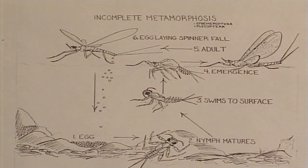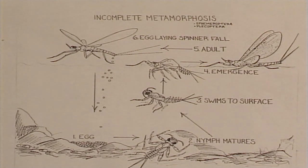Essentially, these are the mating stages. Most of these aquatic insects die or fall spent on the water after laying their eggs, again making themselves readily available to be fed upon. The four basic food groups, or the four main categories of aquatic insects, are your mayflies, your caddisflies, your stoneflies, and your midges.